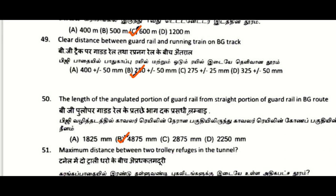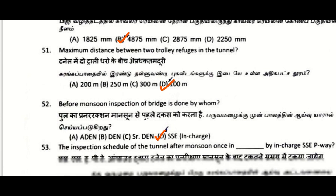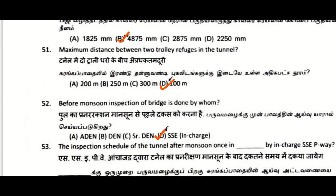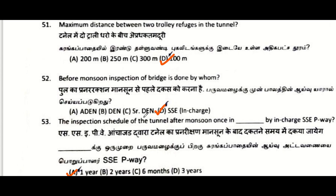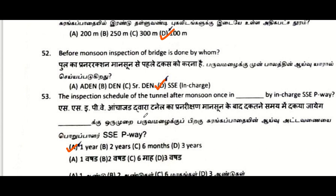Clear distance between guard rail and running rail on BG track: 250 plus or minus 50 mm. Length of the angulated portion of the guard rail from the straight portion in BG: 4875 mm. Maximum distance between two trolley refuges in a tunnel: 100 meters.